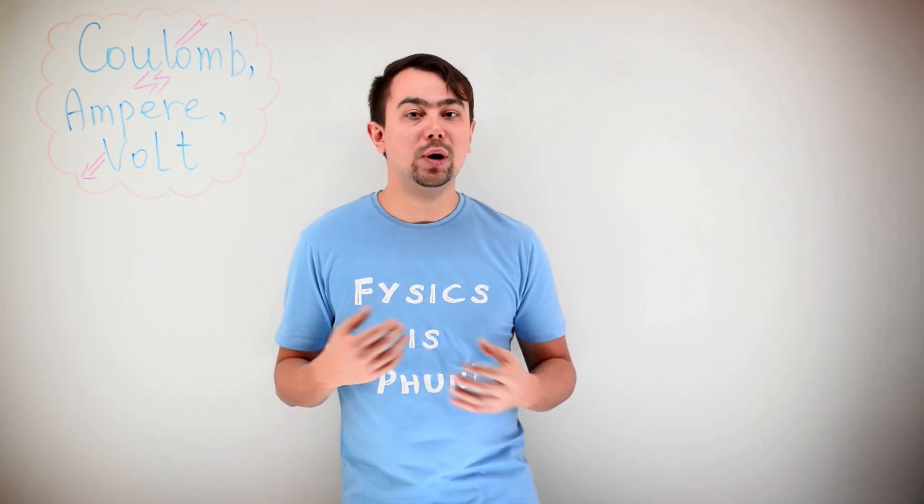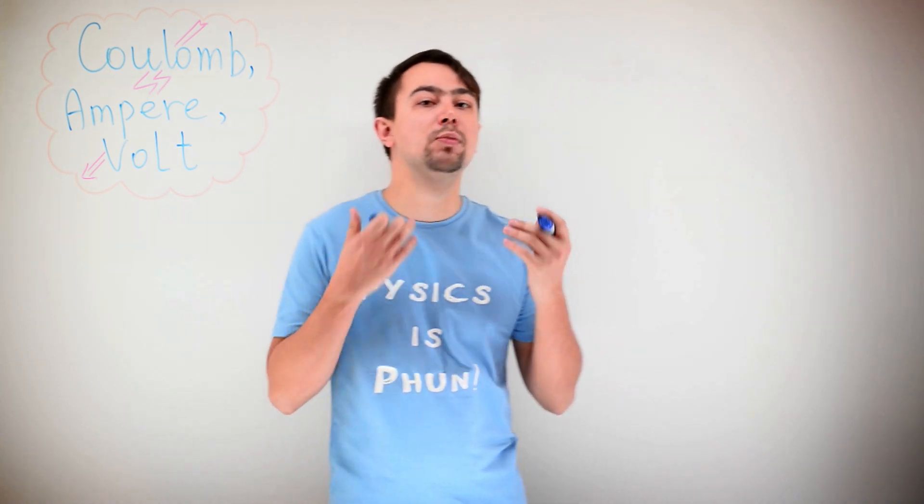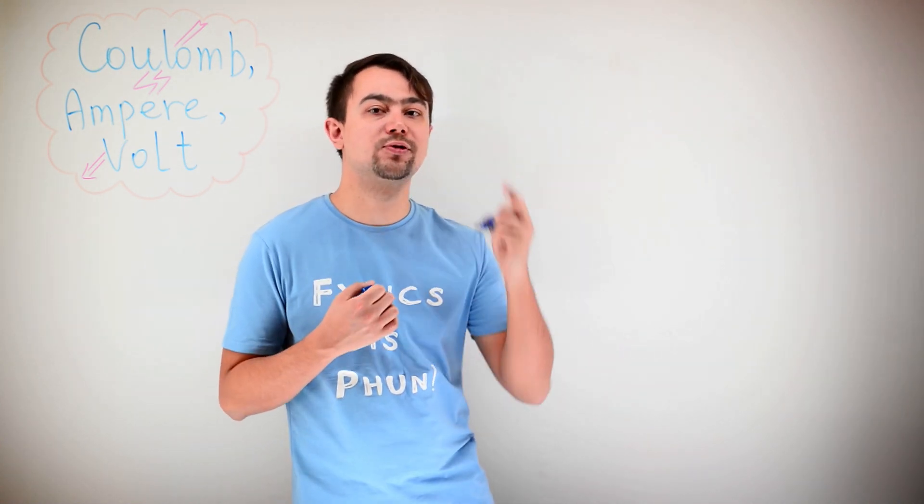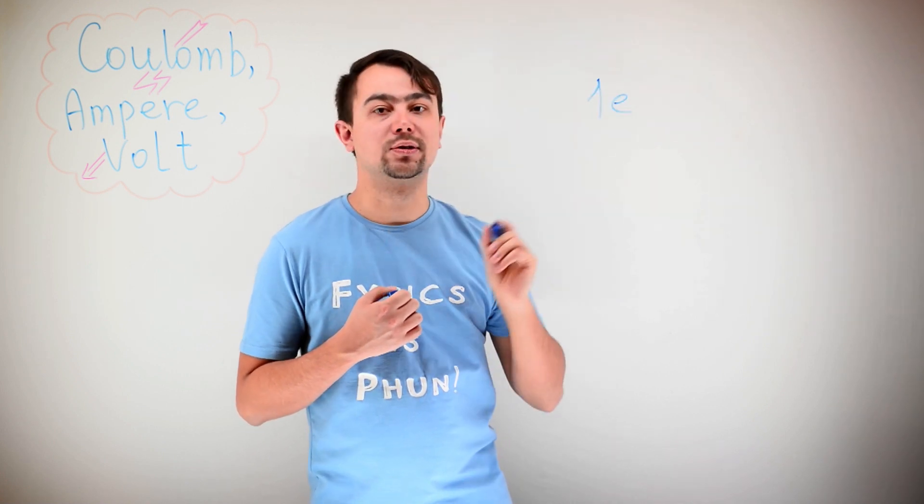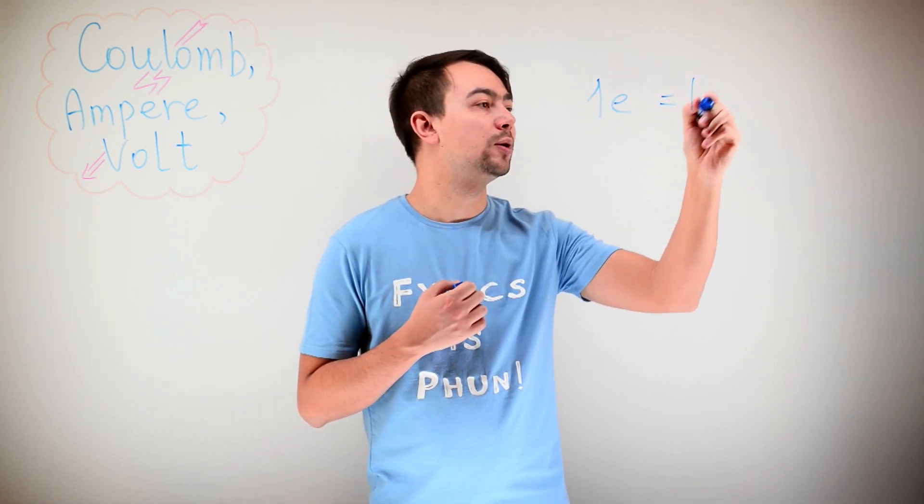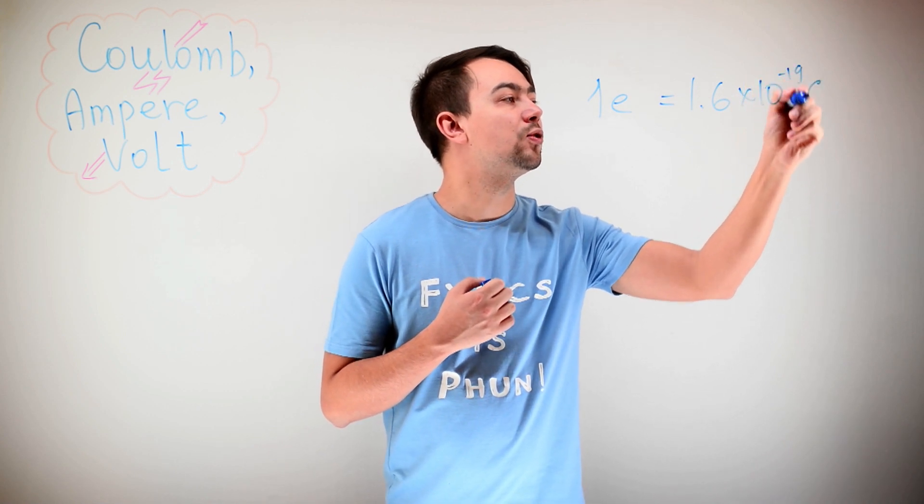What does it mean? Well, we start with the elementary charge. The elementary charge is the smallest possible charge. It's the charge of one electron. So, one electron carries a charge of 1.6 times 10 to the minus 19th Coulombs.